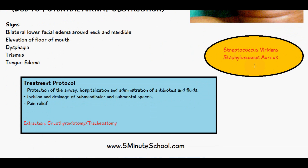Some of the bacteria responsible include most commonly Streptococcus viridans or Staphylococcus aureus. The treatment protocol for Ludwig's angina is firstly to protect the airway. We must also hospitalise the patient and administer antibiotics and fluids. There is also incision and drainage of the submandibular and submental spaces to remove the purulent infection, as well as pain medication.